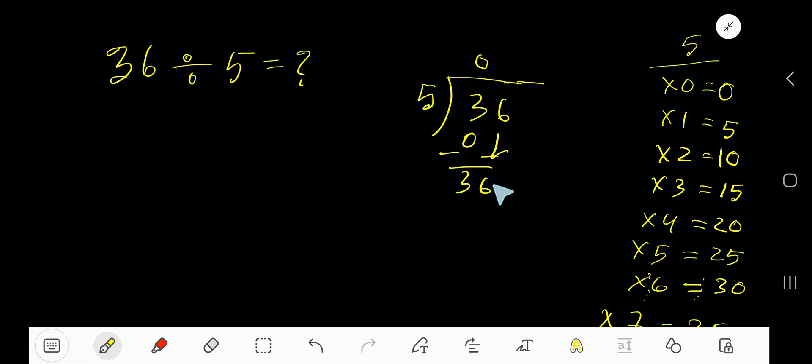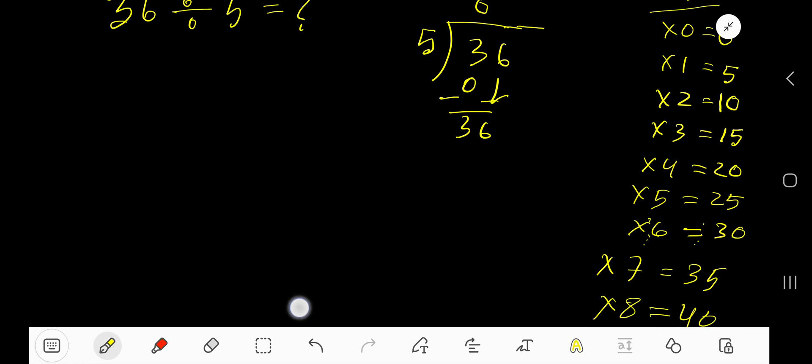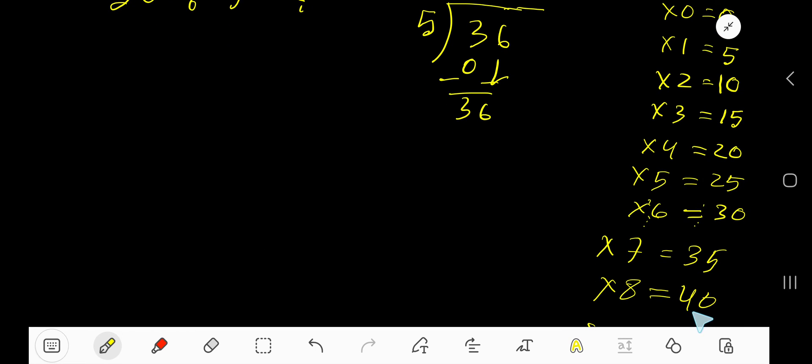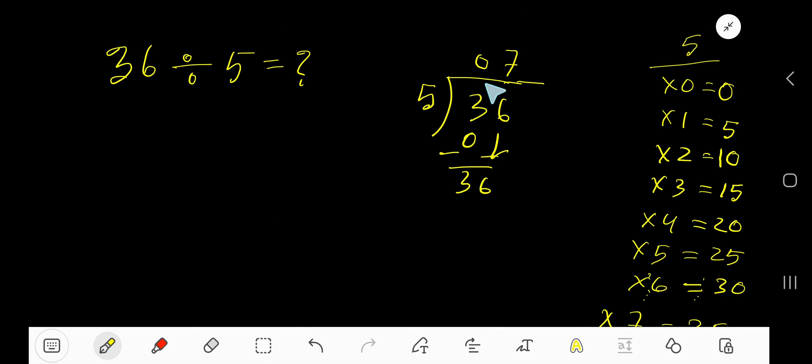Bring down this 6. So 36. 5 goes into 36, how many times? 8 times, which is 40, which is greater. So 7 times 35. So write 7. 7 times 5, 35. Subtract, you are getting 1.